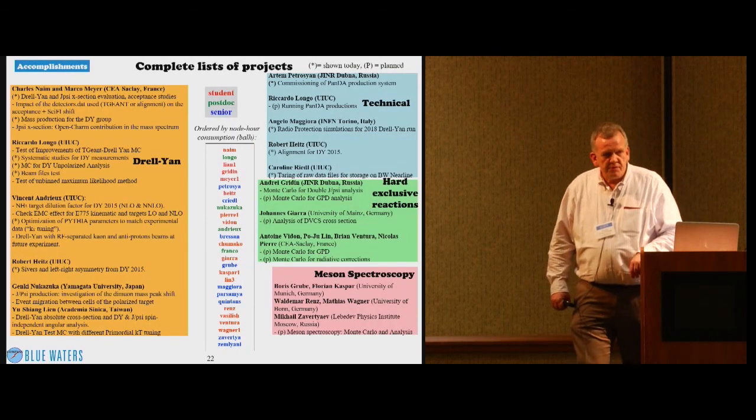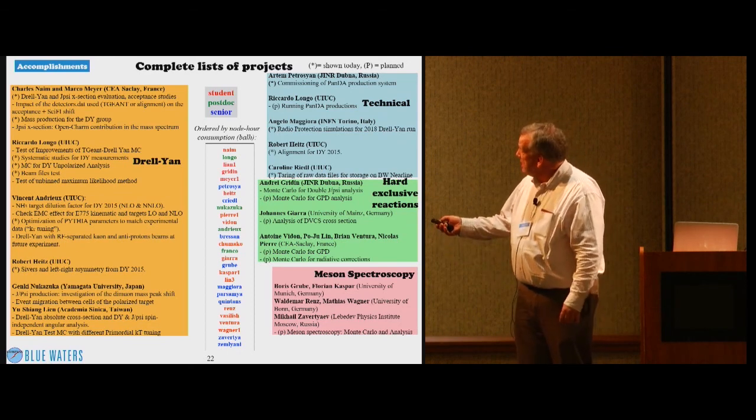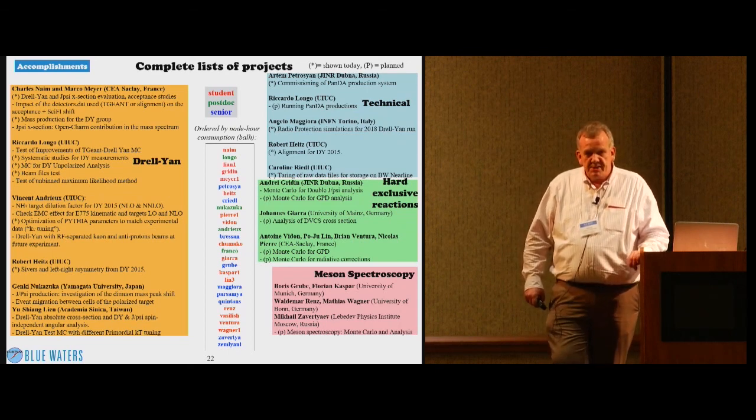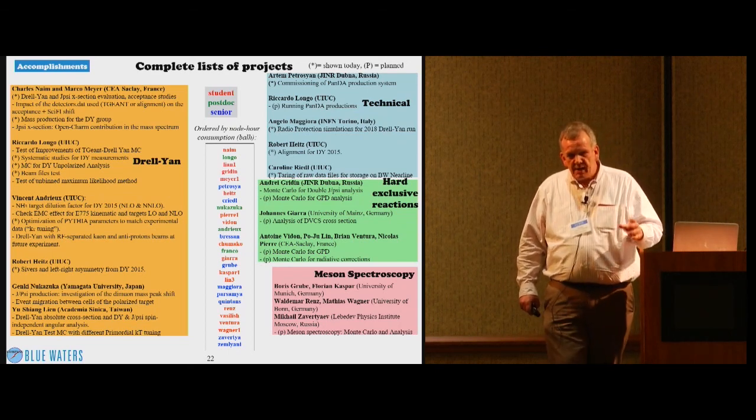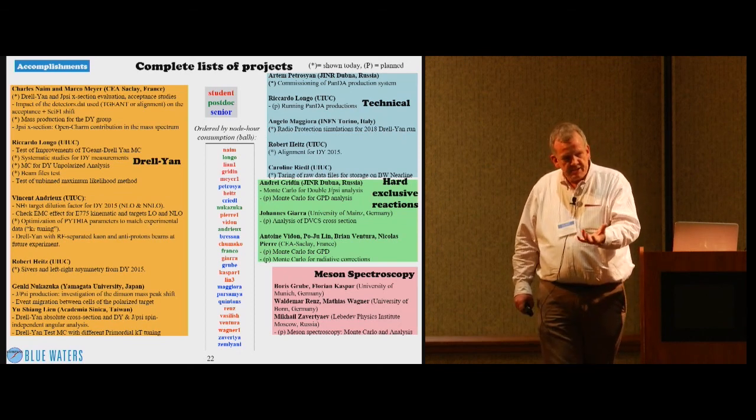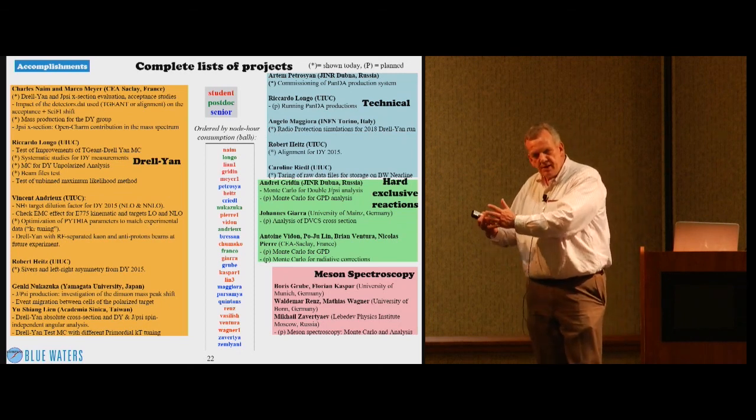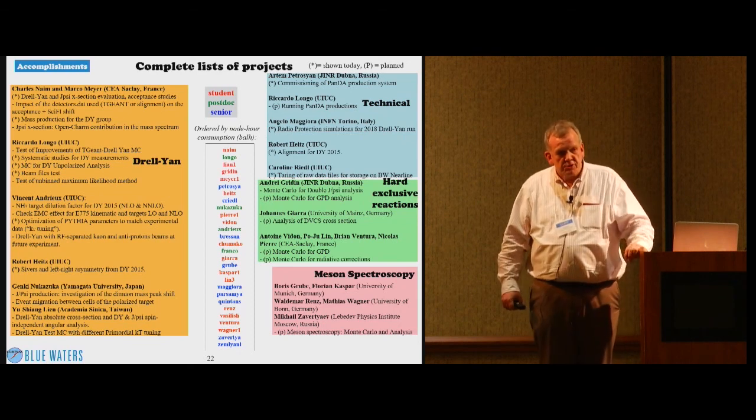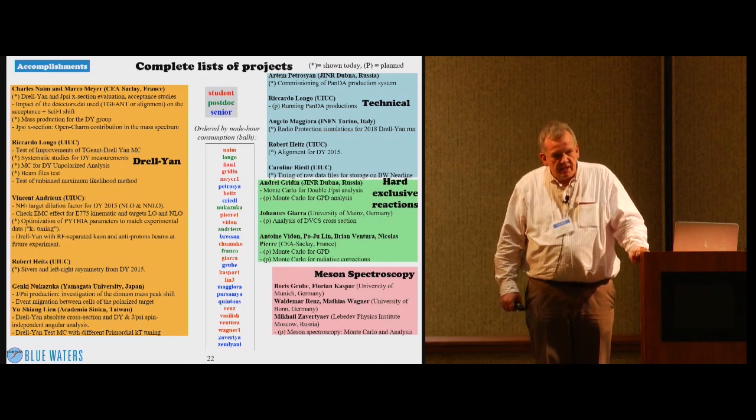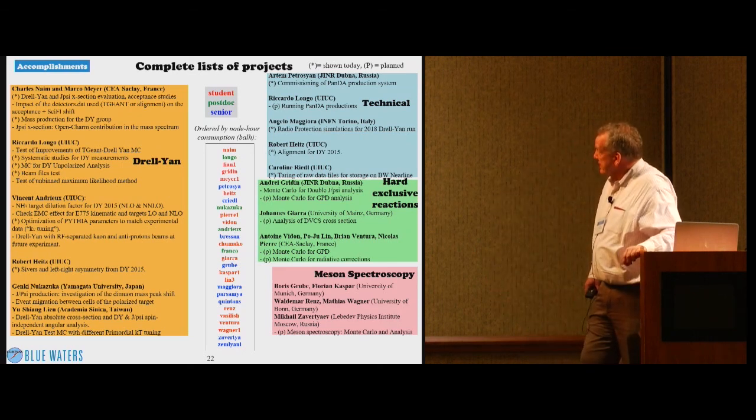Here's a complete list of the projects that are already going on. I think presently there are 28 COMPASS users that have Blue Waters accounts. This number will still increase. I believe there are also users that do not necessarily do physics analysis on Blue Waters, but that look at Monte Carlo and physics data that have been brought back to CERN or brought back to Lyon, a French computing center that we use, or back to the INFN in Torino, that has also a computing center.